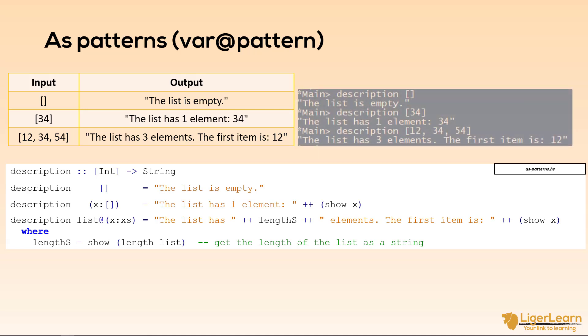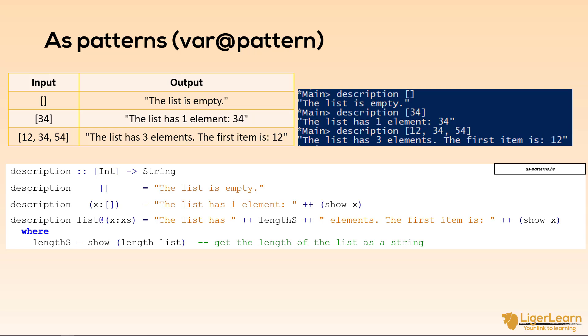We can see that everything works as we expect when we test our functions in GHCI. As patterns are not restricted for use with lists only. You could if you wanted to use them with your own custom algebraic data types.